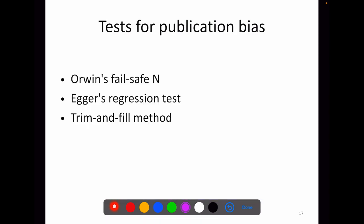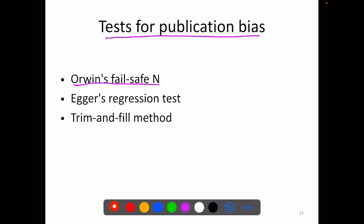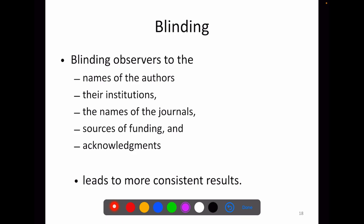We can also identify publication bias using statistical tests. Orwin's failsafe N test is used to check how many studies should be added in order to reduce the test statistic to a trivial size. Egger's regression test tests whether the funnel plot is symmetrical or not. The trim and fill method imputes data if the funnel plot is asymmetrical. Blinding in meta-analysis can be done by blinding the name of the authors, the institutions, the name of the journals, the source of funding, and acknowledgements — all can be blinded, which leads to more consistent results.